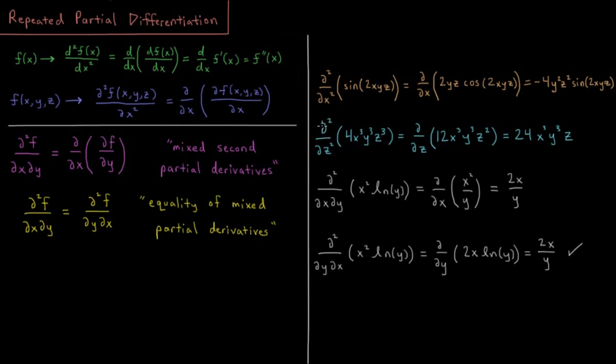Another example: the second partial derivative with respect to z of 4x³y³z³. So by the polynomial rule, the derivative of z³ would be 3z². That 3 times this 4 gives us a 12. And then x³ and y³ are constants, so we pull those out. So there's our first derivative.